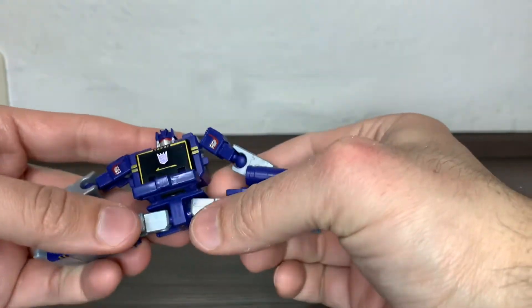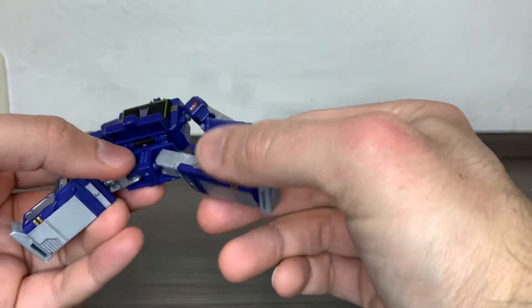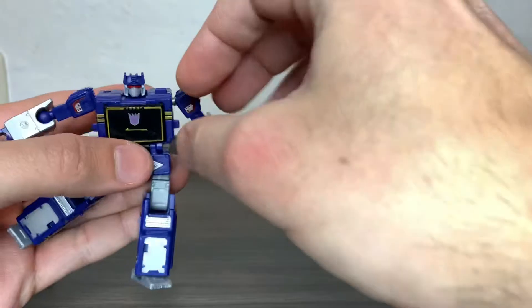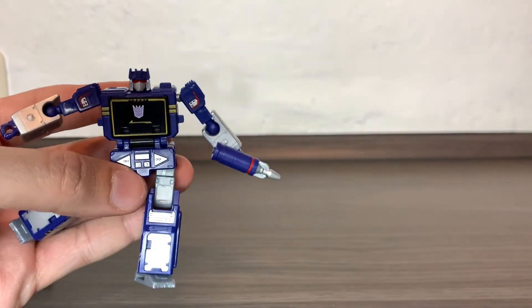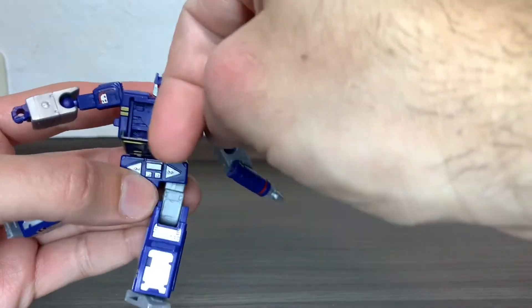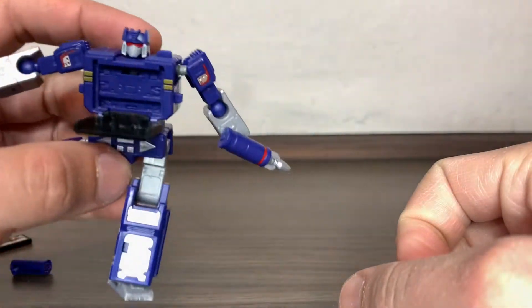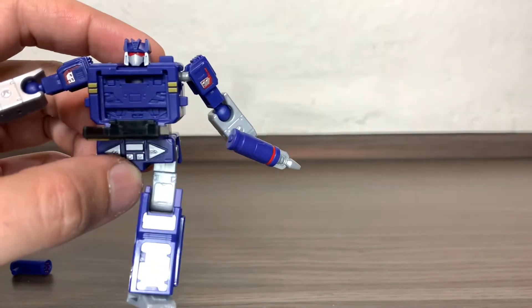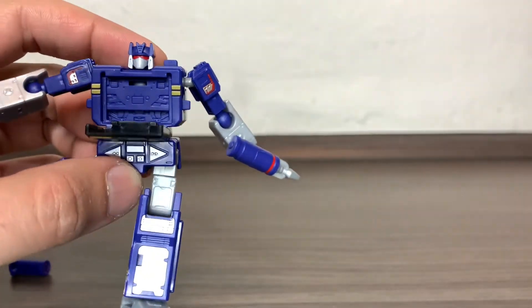He can do the full splits, also due to transformation. The cassette deck has no button—you cannot push it, it's just sculpted there. No paint on the inside, which would be great if they had painted that silver or something, but they didn't even paint it in the Voyager class one.